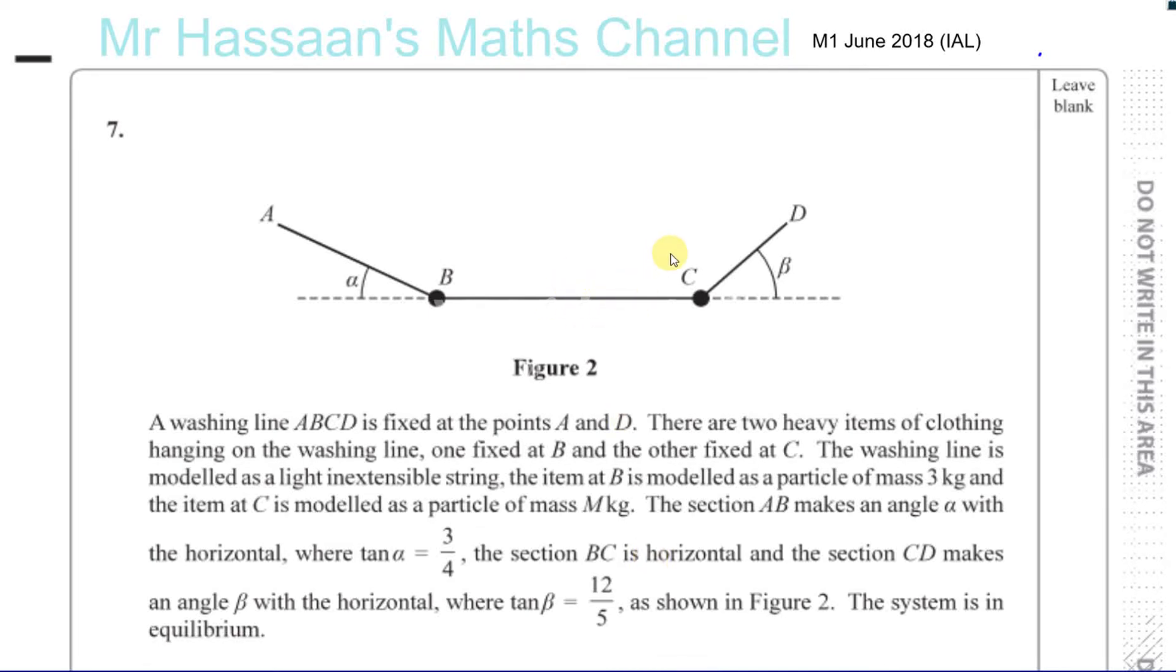Okay, question number 7 from M1, June 2018, International A-Level paper. A washing line ABCD is fixed at the points A and D. There are two heavy items of clothing hanging on the washing line. One is fixed at B, and the other one is also fixed at C.